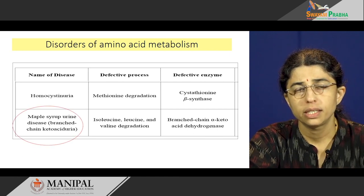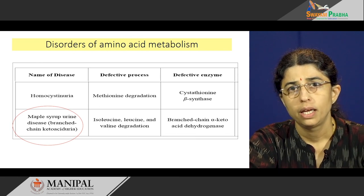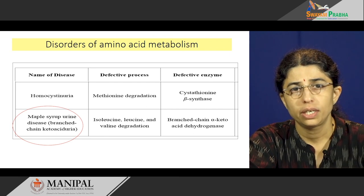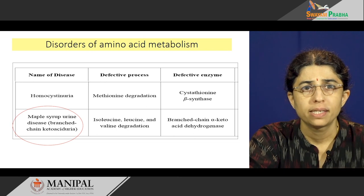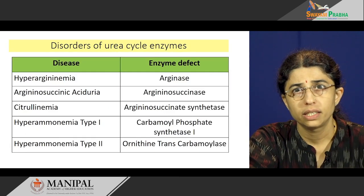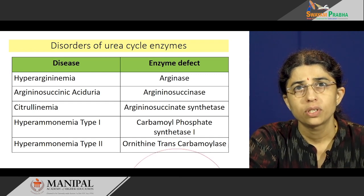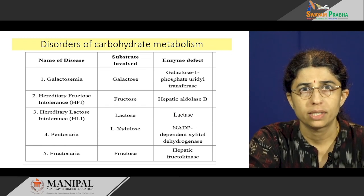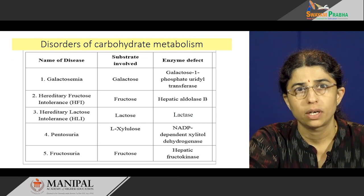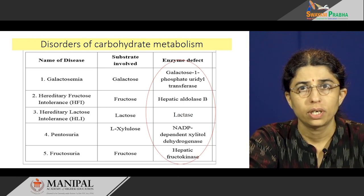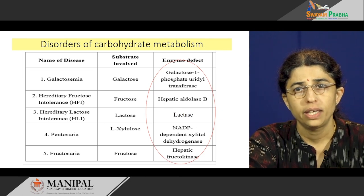Maple syrup urine disease is another important inborn error of metabolism involving branch chain amino acids like leucine, isoleucine and valine. This condition is associated with excretion of maple syrup-smelling urine which smells of burnt sugar. Similarly, we have urea cycle disorders, which are due to defects in enzymes of the urea cycle. For carbohydrate metabolism, disorders include galactosemia, hereditary fructose intolerance, hereditary lactose intolerance, pentosuria and fructosuria — again all due to various enzyme defects.